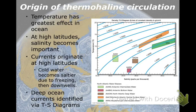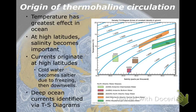Temperature has the greatest effect — colder water is simply more dense. The range of temperatures we see in the ocean means temperature is going to have a bigger effect. Salinity does have an effect, but it doesn't vary that much — maybe as low as 33 and as high as 37 PPT. If we had a bigger range of possible salinities, it would become a bigger player in thermohaline circulation.